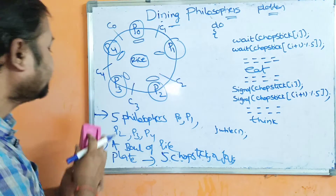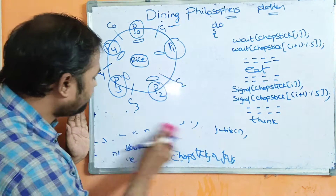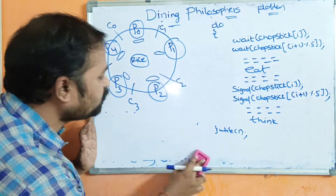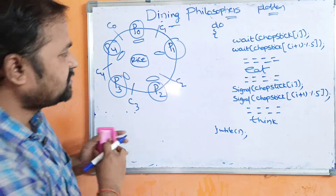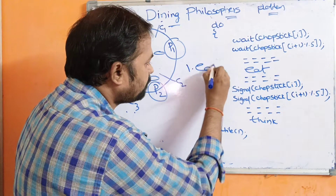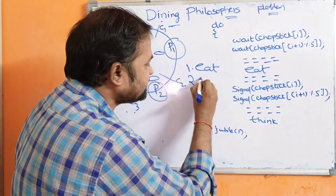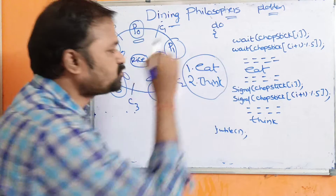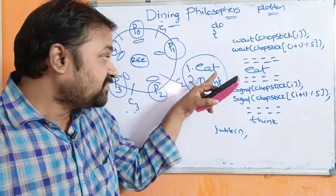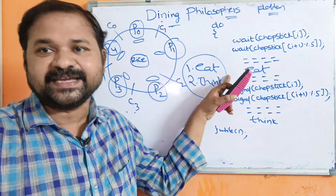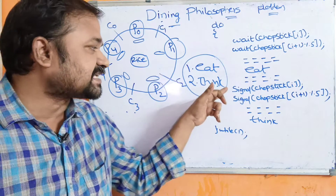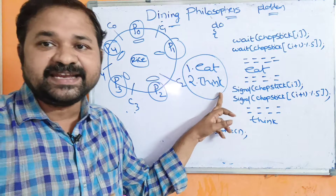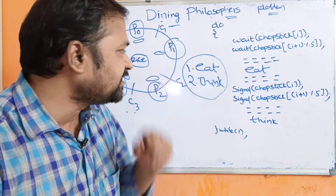Each philosopher will mainly be in two states and will do mainly two activities. The first activity is the philosopher can eat, and the second activity is the philosopher can think. If the philosopher is not eating, then it means the philosopher is thinking. If the philosopher is not thinking, then it means the philosopher is eating.